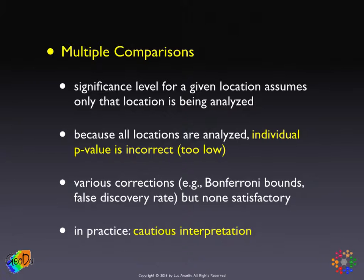In the literature, there's quite a bit of literature on this problem of multiple comparisons. There are a number of corrections that have been suggested — some of them are bounds, some are ways to deal with the multiples. Bonferroni bounds and false discovery rate corrections are the most well-known of these.